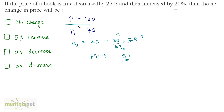We took the base price as 100 and after decreasing and then increasing the price, we get the final price P2 as 90. So what is the difference? There is a decrease in the price — the price has gone down from 100 to 90, so there is a 10% decrease, and that's our answer.